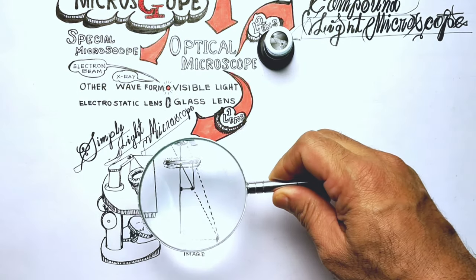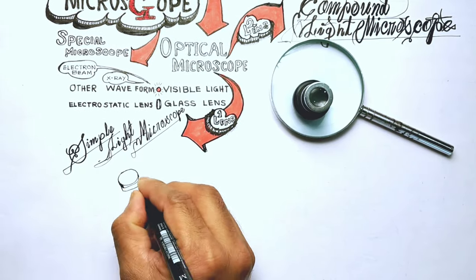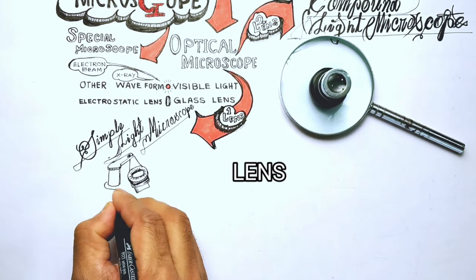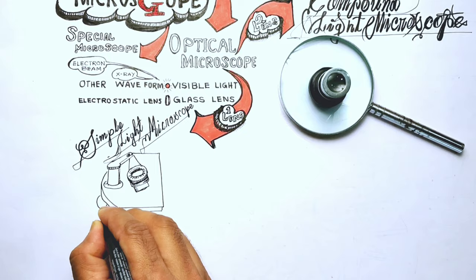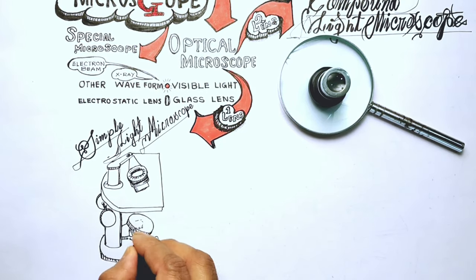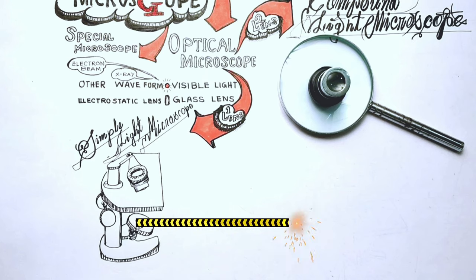Simple light microscope is actually a magnifying lens and is a combination of a convex lens with a holder called the stage for the specimen. The sample is illuminated from below by reflected lights with the help of a mirror fitted underneath the stage.